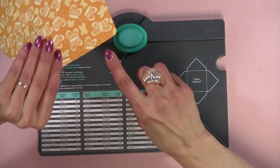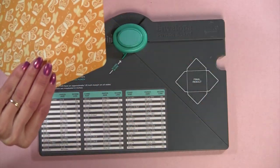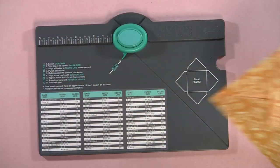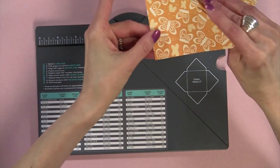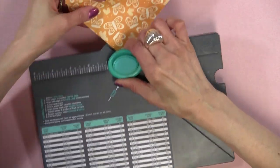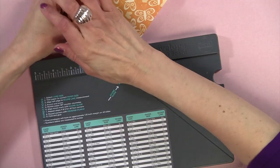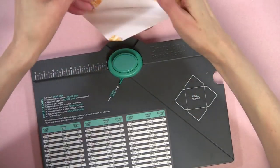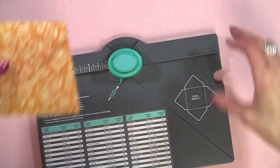The last step will be taking the point of the envelope, put it in your corner rounder, and punch it. And that's the last step of the process.